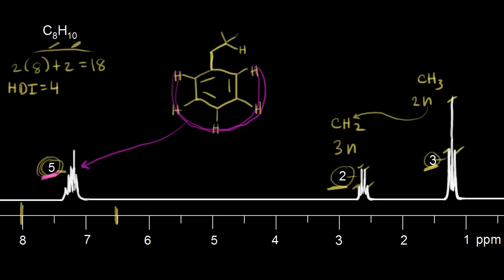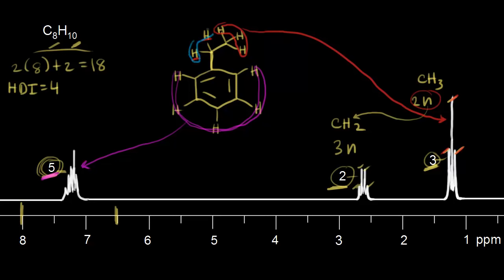Let's draw in all our protons and color coordinate to verify. The red methyl protons are giving us this signal — we expect two neighbors because we have three peaks — and here are the two neighbors: one, two. The two CH2 protons are giving us this other signal; we expect three neighbors because we have four peaks: one, two, three, four.